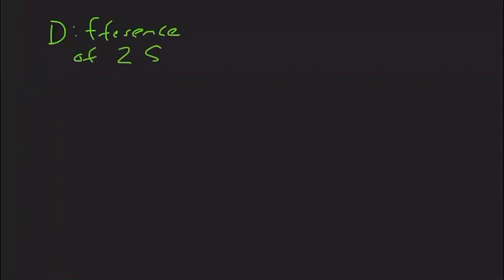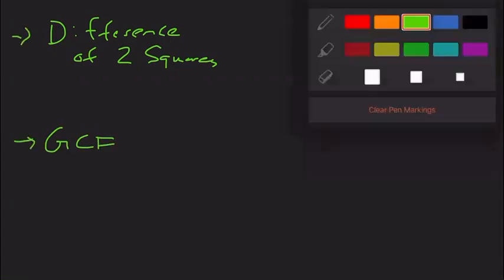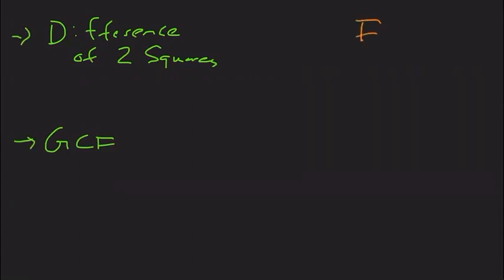All right, so here we're going to look at factoring. This will be a review from what we did yesterday, which was factoring by two different methods: the difference of two squares method, and the method of factoring out a greatest common factor. So first, what does it mean to factor at all?